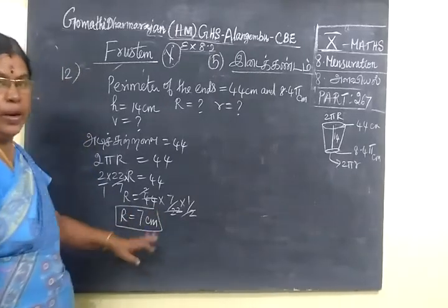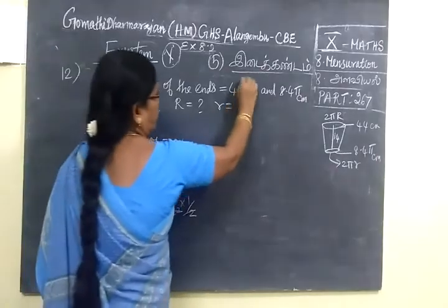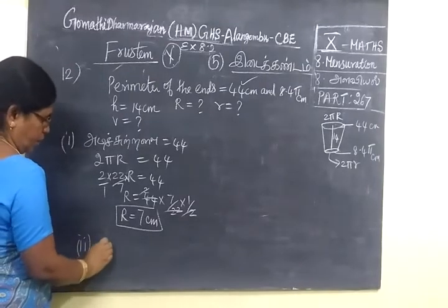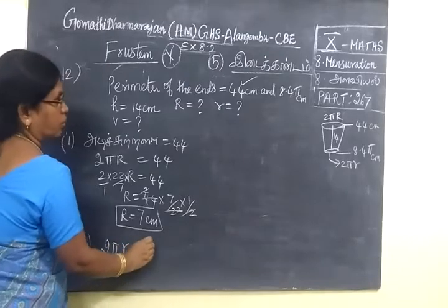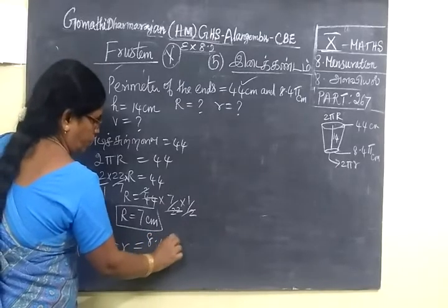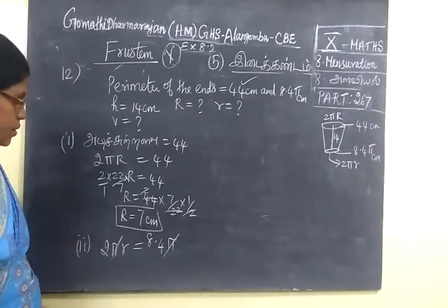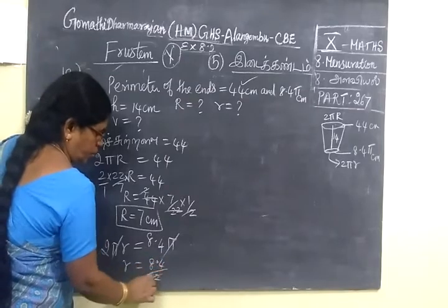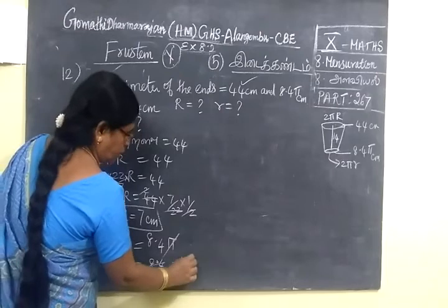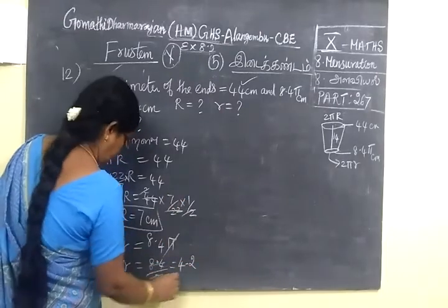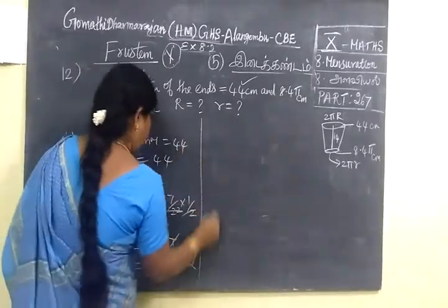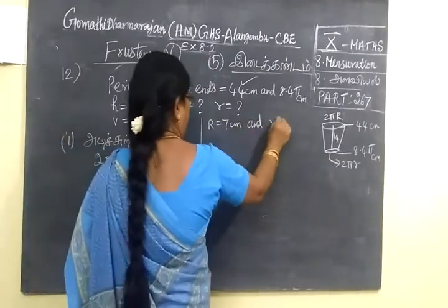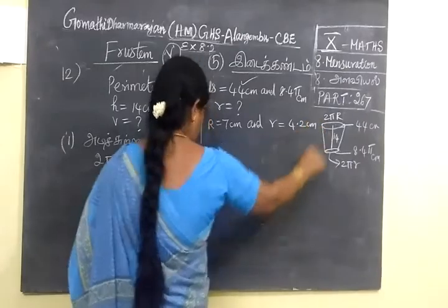In the same way, you are finding smaller r. 2πr equals to 8.45. So r equals to 8.45 by 2π. If we cancel, this is 4.2. So capital R is 7 cm and smaller r equals to 4.2 cm.